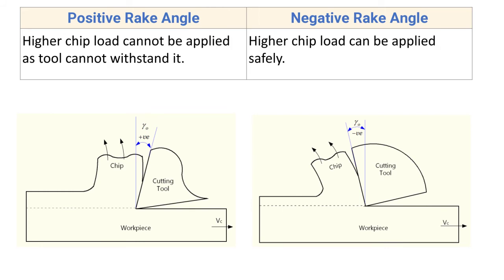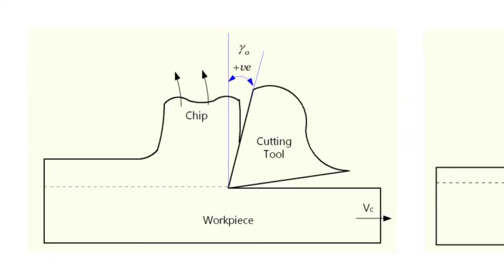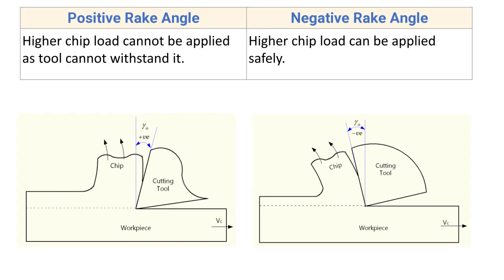Next difference: with positive rake angle, higher chip load cannot be applied as the tool cannot withstand it. There is less material at the tool tip, so you cannot use this cutting tool at higher feed rates. If you increase the feed there will be more cutting forces and more reaction force from the workpiece on the tool tip, and the tool tip may break. So higher chip load cannot be applied safely.